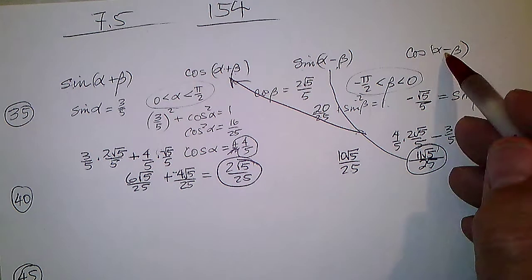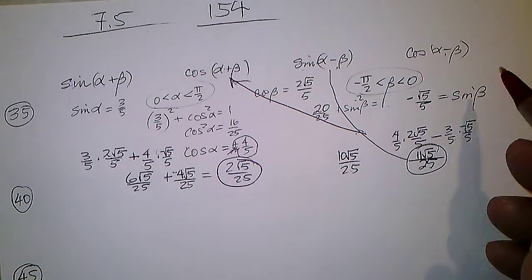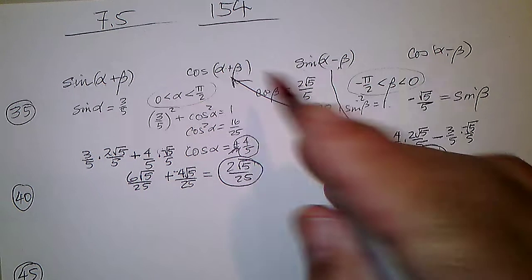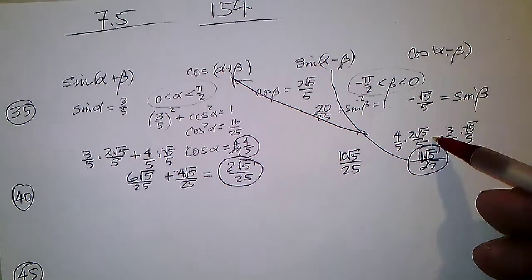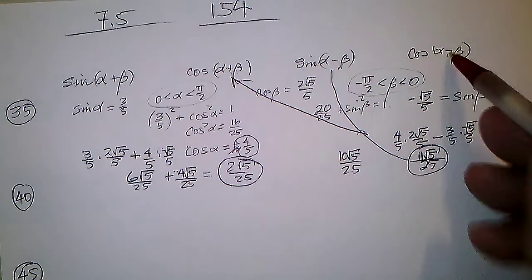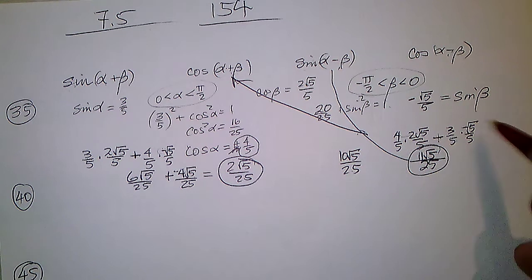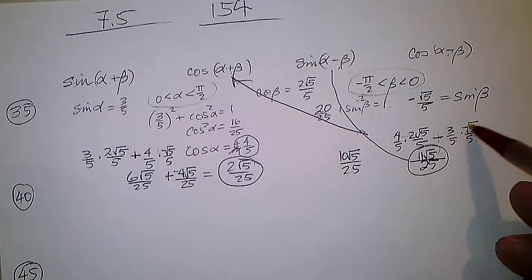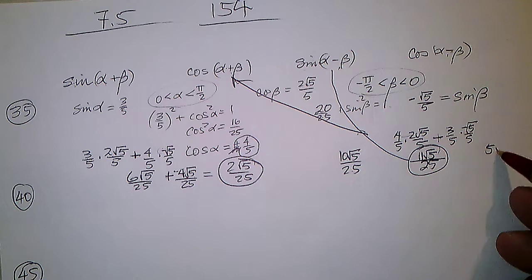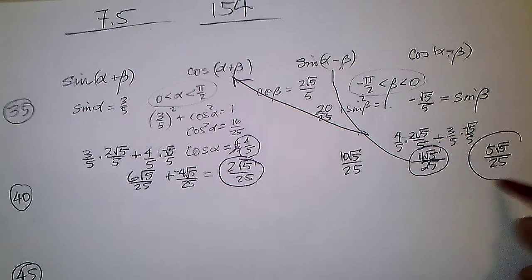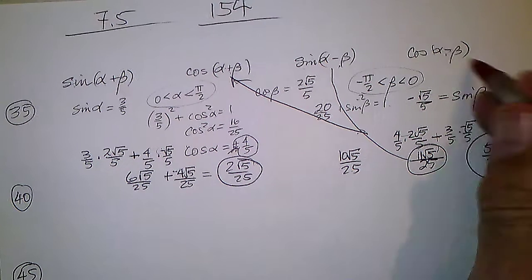For cosine of alpha minus beta, the sign on the sine-sine term flips to plus. So we get 8√5 minus 3√5, which is 5√5 over 25.